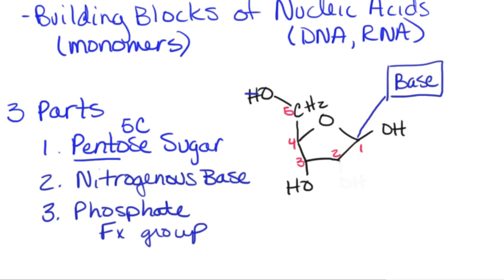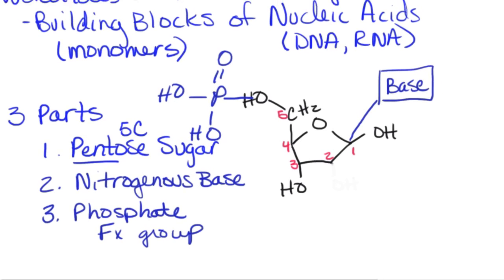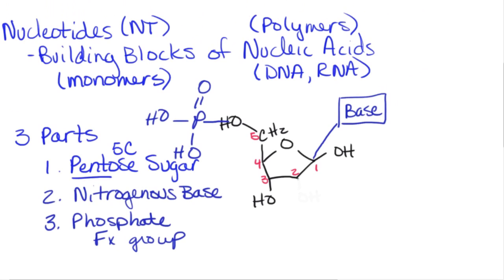The phosphate will go right here, attached at carbon five. Here's going to be my phosphate group, and that is the general structure of a nucleotide. We'll have a bunch of these hooked together to make very large molecules — several million or hundred million of these joined together. The nitrogenous base is the variable part if we're talking about nucleotides found in DNA.